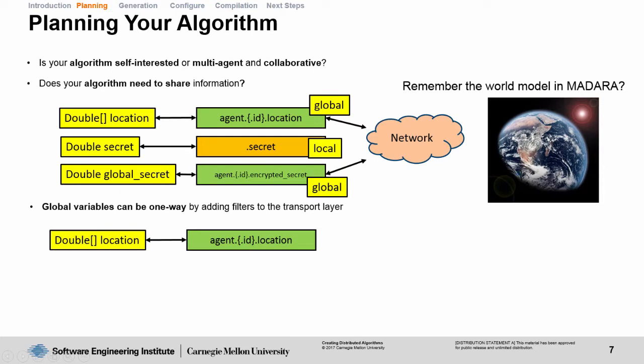Global variables can be one-way by adding filters to the transport layer. Essentially, MADARA's transport system allows you to add on-receive, on-send, and on-re-broadcast filters that can be applied to either shape knowledge into the knowledge base or to shape knowledge from the knowledge base to the network. If we wanted to change the way global variables are being shared over the network, we could add an on-receive filter on this agent location that essentially causes it to drop that information before being applied to the knowledge base.